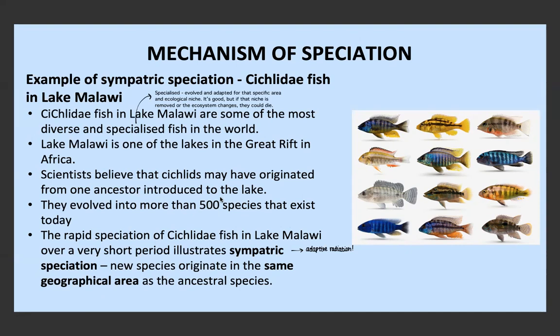This happened not only with the plant-eating and fish-eating split, but with a whole range of different niches within Lake Malawi, eventually causing the cichlids to diverge into completely different species — more than 500 different species in that one lake, all starting from one original ancestor species.